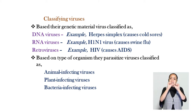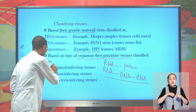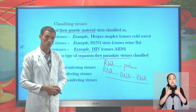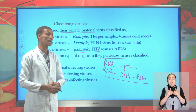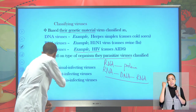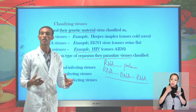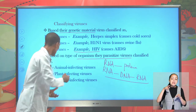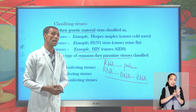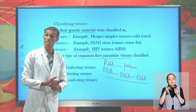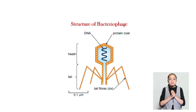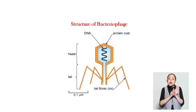Another criteria by which viruses can be classified is based on what type of organism they parasitize. If a virus parasitizes an animal, it is said to be an animal-parasitizing virus. If it parasitizes bacteria, it is said to be a bacteria-parasitizing virus. The commonly studied type of virus is the bacteriophage — a bacteria-infecting virus.